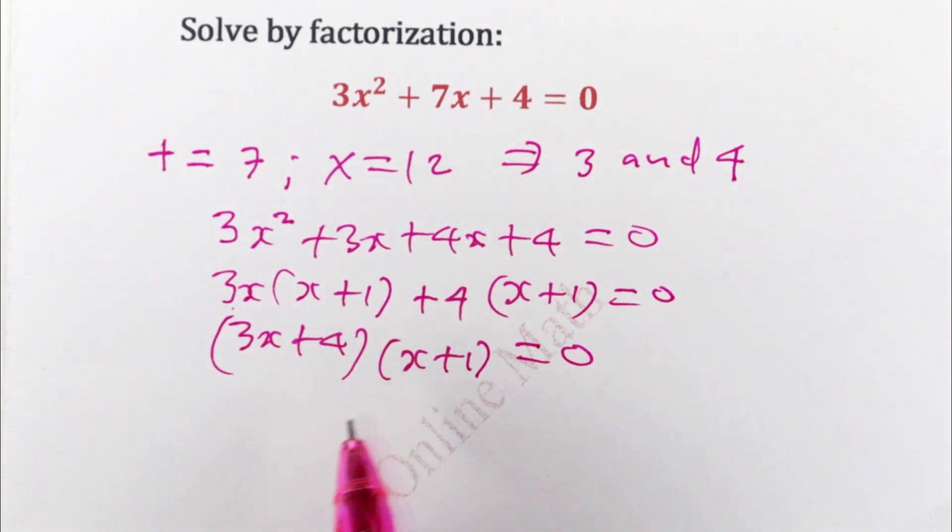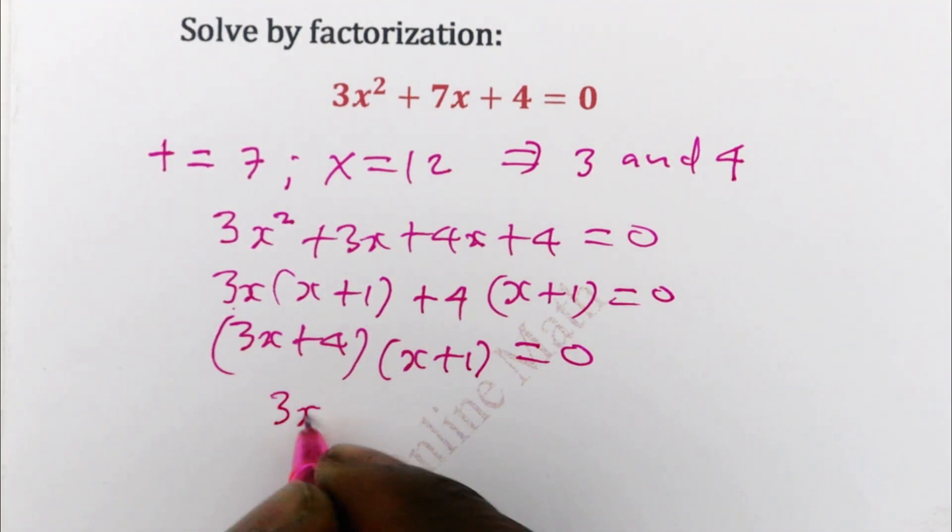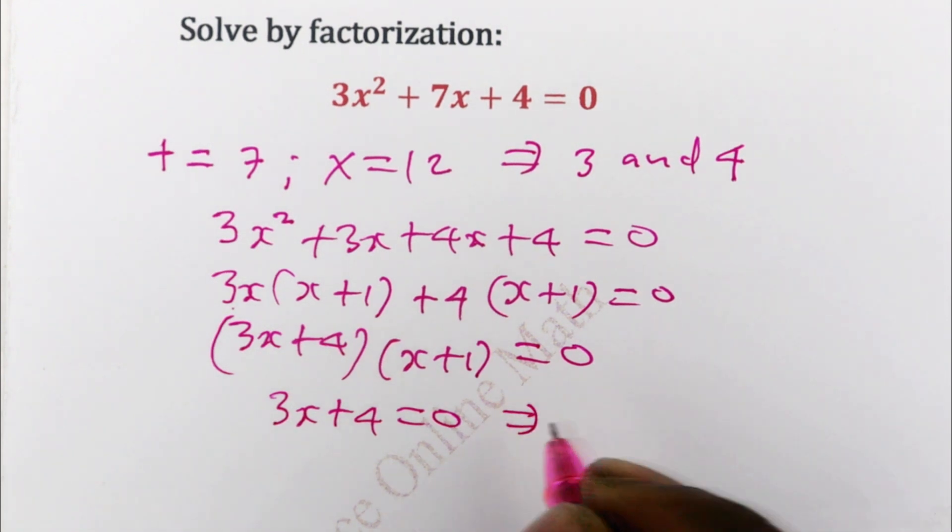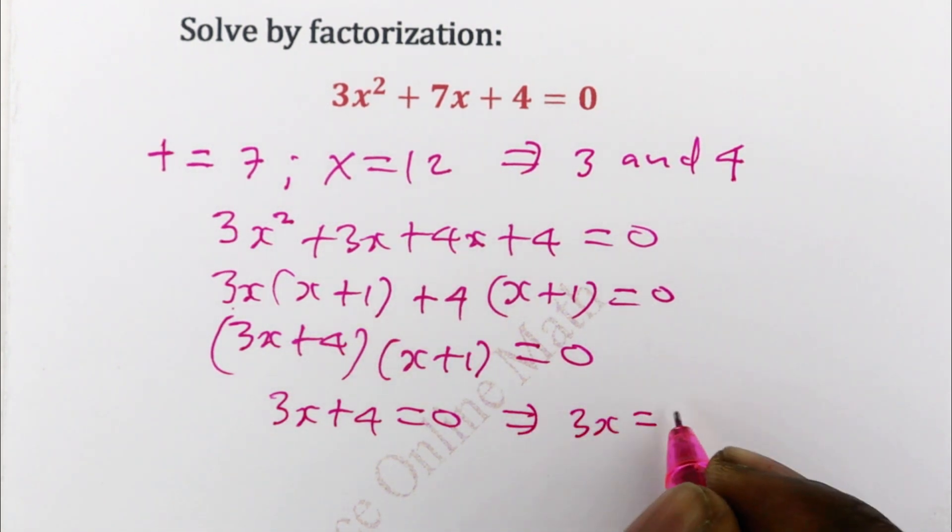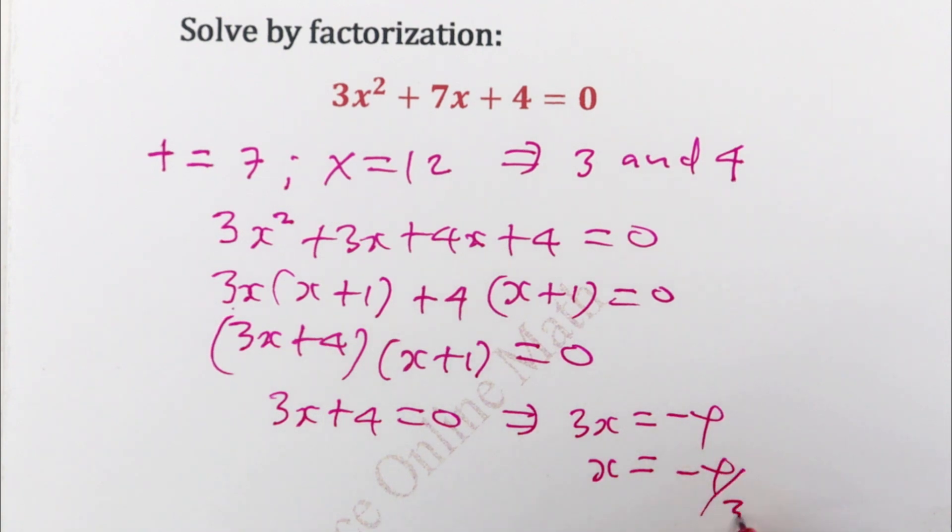So the product of these two numbers is equal to 0. So it means either 3x plus 4 is equal to 0. So that 3x is equal to negative 4 and x is equal to negative 4 over 3.